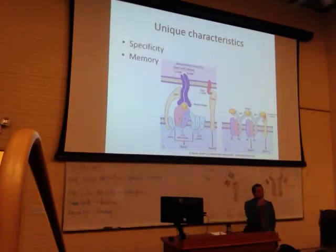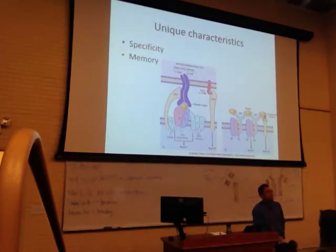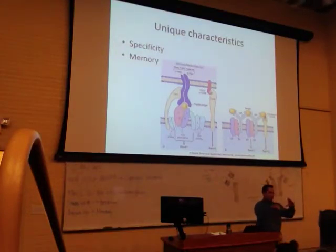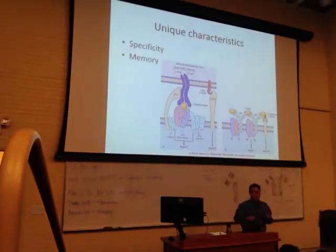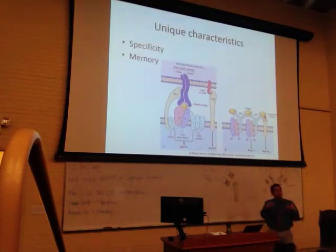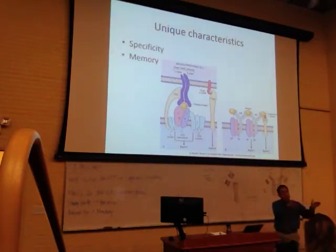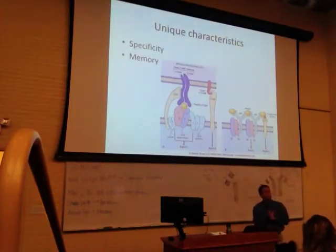Think about Cold War cartoons — a giant red button to launch a nuclear warhead, where the general and the president both had keys they'd turn simultaneously. That's what this is: a safety mechanism to make sure you really meant to activate this T cell to go kill something. Co-stimulation is important for activation to be successful.